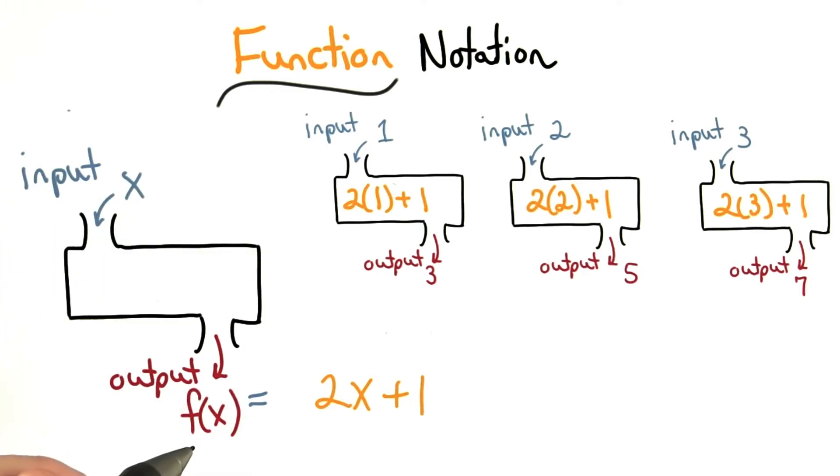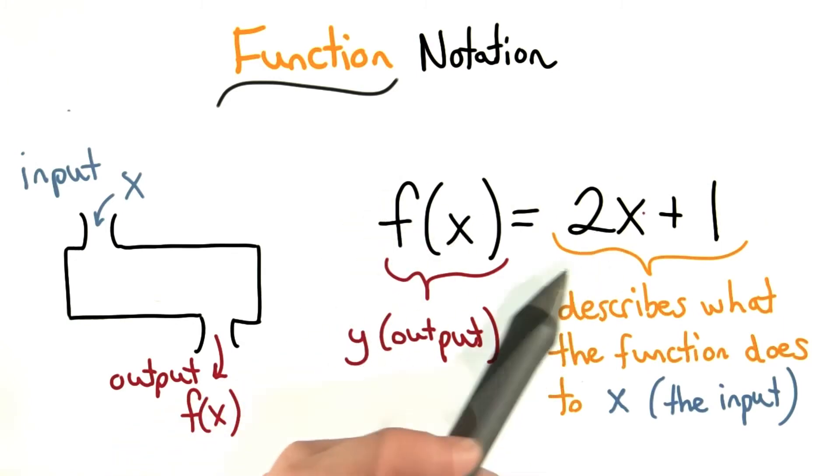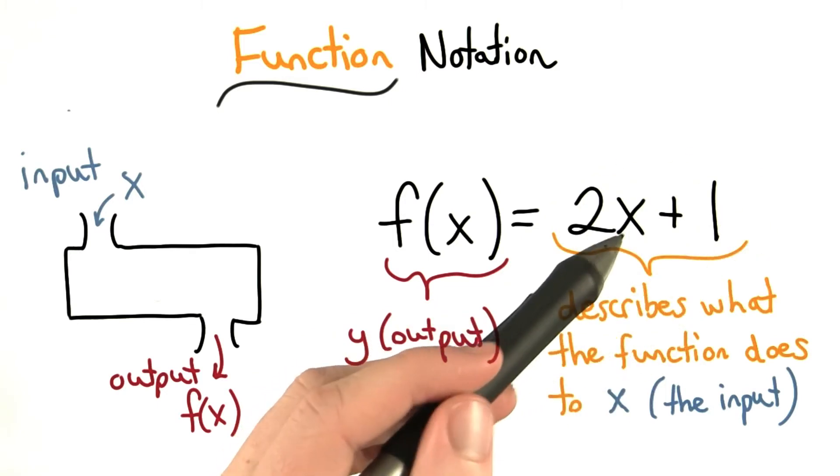We'll use f of x, or a function of x, because the output relies on the input x. f of x is the name of the function that represents the output, and x is our input variable, and this side of the equation describes how we change x.